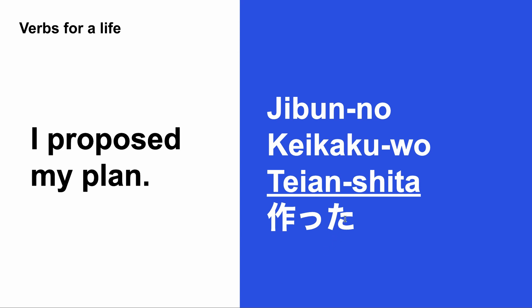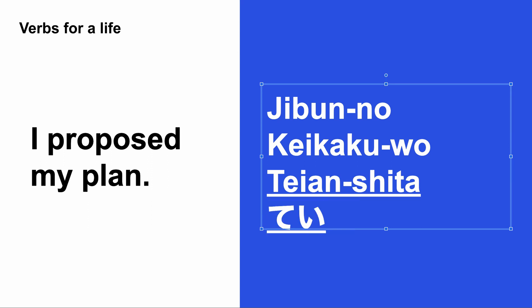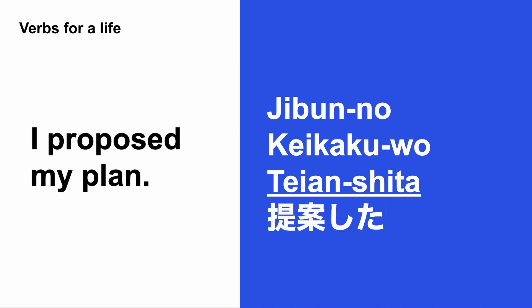提案した means proposed. For example: I proposed my plan — 自分の計画を提案した. 自分 means mine, 計画 means plan. So: 自分の計画を提案した — I proposed my plan.